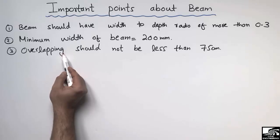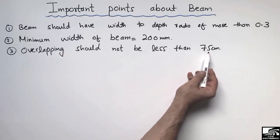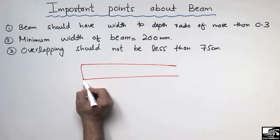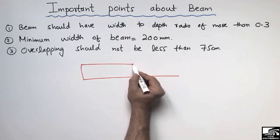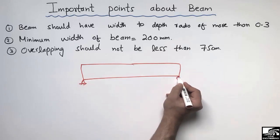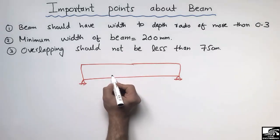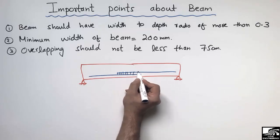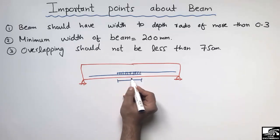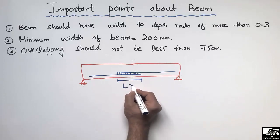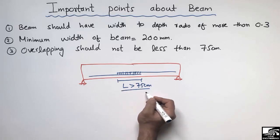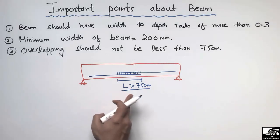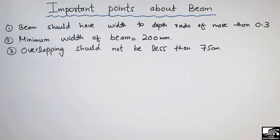The third point states that the overlapping length should not be less than 75cm. Consider a beam supported at both ends where steel bars overlap. The overlapping length of the steel bars should not be less than 75cm or 750mm — it should always be greater than 750mm. This is the requirement for the overlapping of steel bars in beam design.